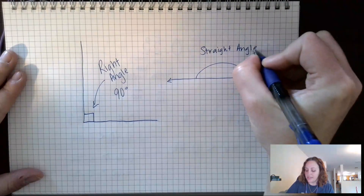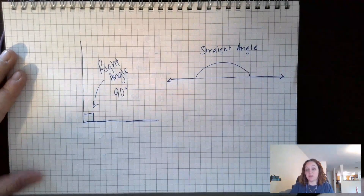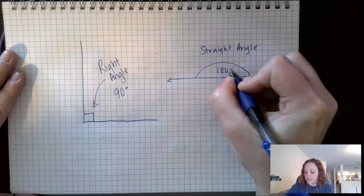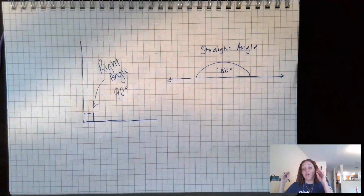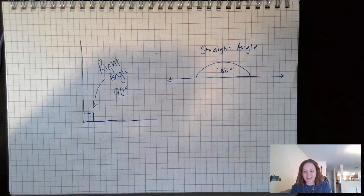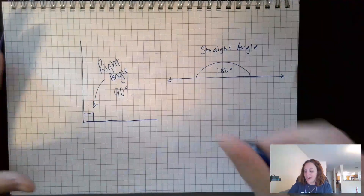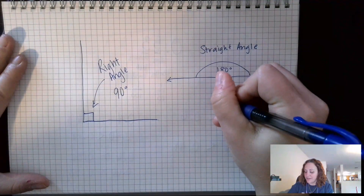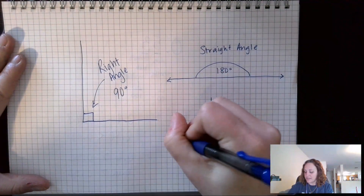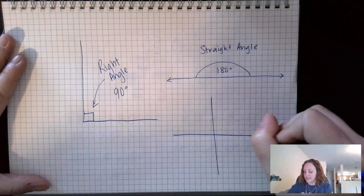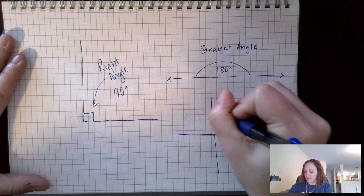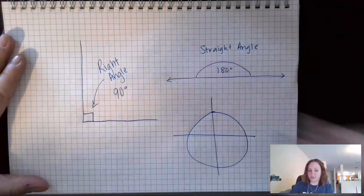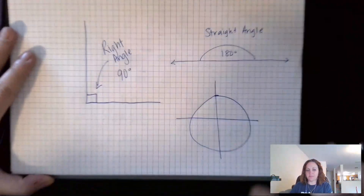You also know that this is a straight angle. If it's a straight line, it's a straight angle, and we know that a straight angle is exactly 180 degrees. You have to know that as well. And if we have a full circle...